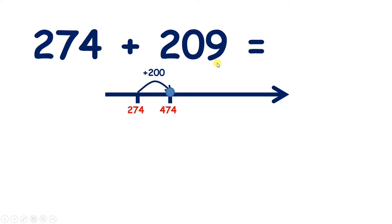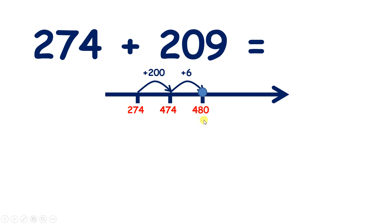So now we need to add nine units. If we add six units, that takes us to our next 10, so takes us to 480. Now how many more units do we need to add? We need three more units, which takes us to 483.